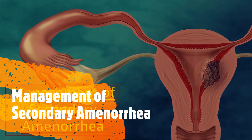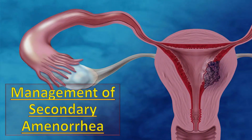Bismillahirrahmanirrahim. Today we will talk about the management of secondary amenorrhea. The management depends upon the identification of the cause of secondary amenorrhea. Once the underlying cause is detected, the further management is straightforward and menstruation is restored by correction of etiological factors. We have already discussed the causes and diagnosis of secondary amenorrhea, which you can find in the eye button in the top right corner of this video.